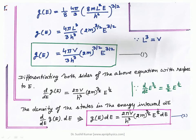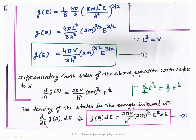The density of states in the energy interval dE is defined by multiplying this differentiation by dE. So G(E)dE = (2πV / h³) × (2m)^(3/2) × E^(1/2) × dE. By this way one can determine the total quantum states in the range dE.